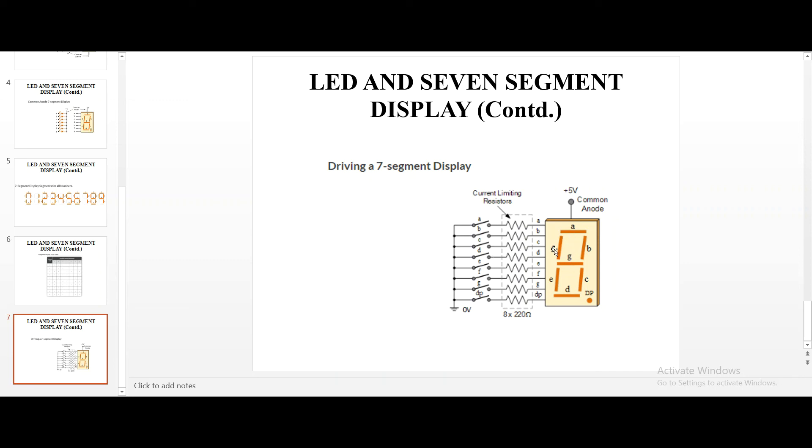So, imagine if you want to obtain 0. Close all the segments from A to DP. DP is just a dot in the corner. Apart from 7 segments, DP is a dot. Now, close all the segments except G. What will you obtain? The digit 0. In the similar way, close all the digits except B and C.